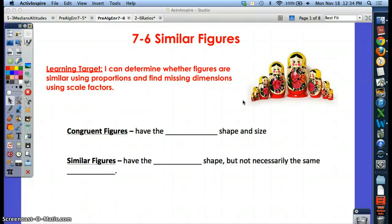The proportions should be the same within each piece, and they're the same shape, but they're not the same size. We took the big doll and shrunk it down multiple times to get the smaller ones. That's the idea of similar figures.